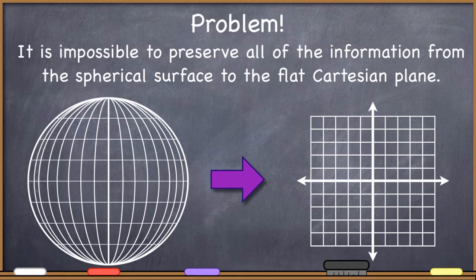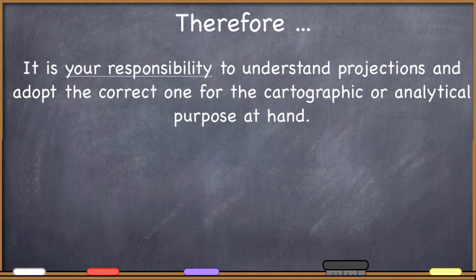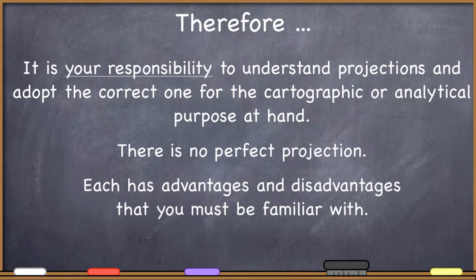The problem is that it is absolutely impossible to preserve all of the information from the spherical surface to the flat Cartesian plane. That means any time we do this transformation, we're going to introduce some kind of distortion. Therefore, it's your responsibility to understand projections and adopt the correct one for the cartographic or analytical purposes at hand. There is no perfect projection — each one has advantages and disadvantages, and you have to use the right one in the context of your analysis or the map you are trying to create.